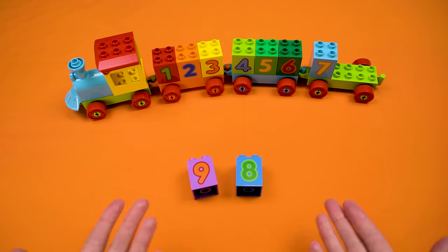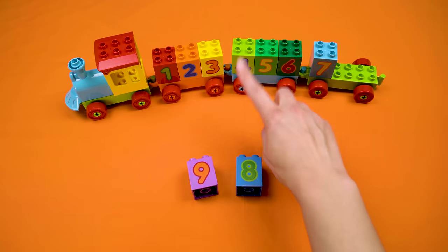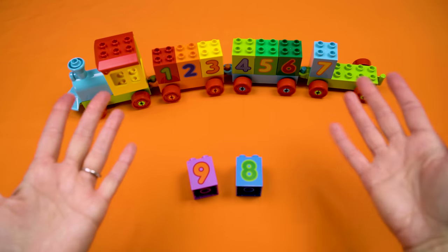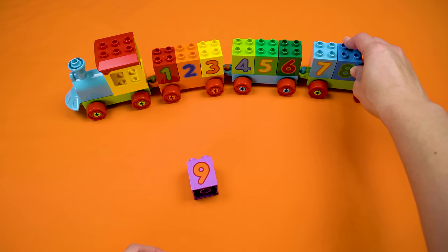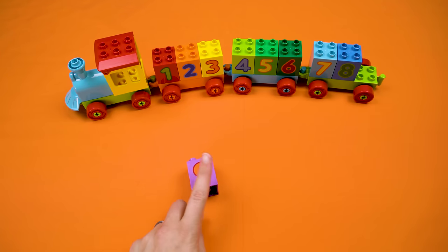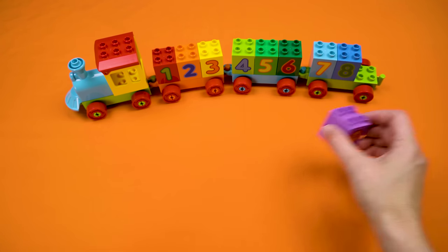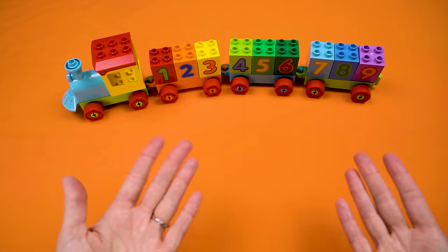And we have two numbers left. One, two, three. Four, five, six. Seven. And... Eight. Yeah! The number eight. Which means the number nine must come after the number eight. That's the last block. And the last space on our train. Good job!